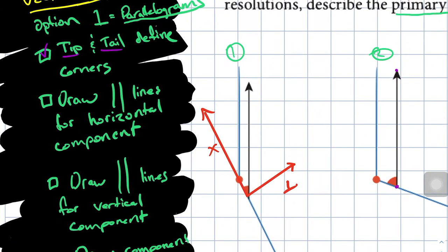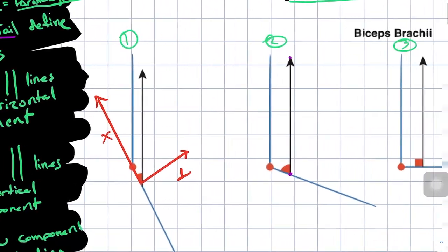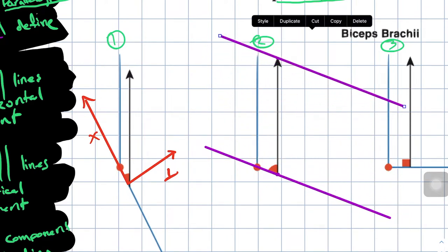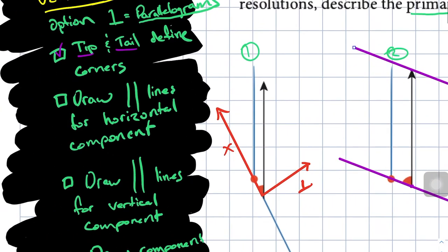Step two is to draw parallel lines for the horizontal component of this vector. Because this vector is originating on the forearm, the horizontal component will be parallel with the forearm. So I will draw a line along the forearm, extend the line, duplicate it, and bring it up here. Now we see that these two parallel lines run tangentially to the tip and the tail of this vector, and that vector is in between them. Step two is done.